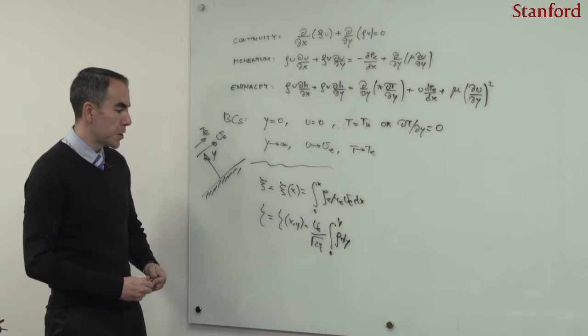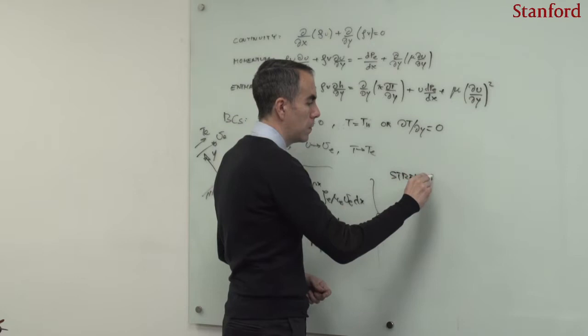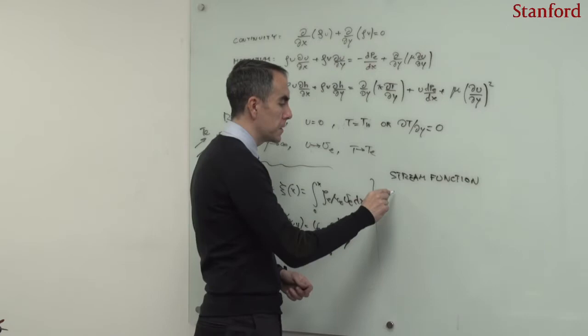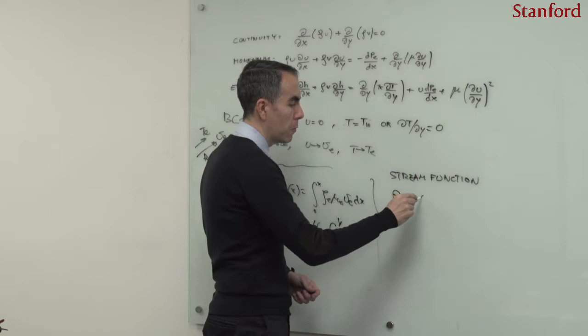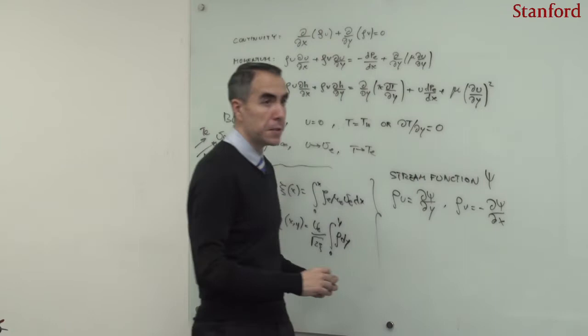On top of that, one can define a stream function. This stream function is defined as: rho times u equals dc/dy, and rho times v equals minus dc/dx, where c is the stream function. By using the stream function, I automatically satisfy the continuity equation.